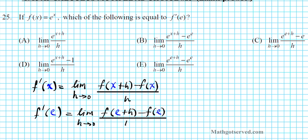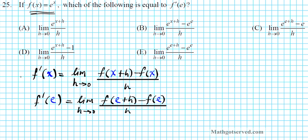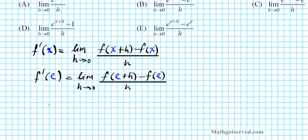Now what is f of e plus h and what is f of e? Well, we're going to make use of this function right here to find out what those expressions are. So f(x) is e to the x. So that follows that f(e) is going to be e to the, instead of x, e to the e.